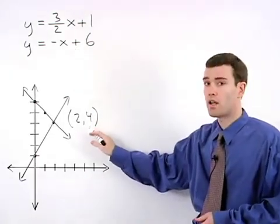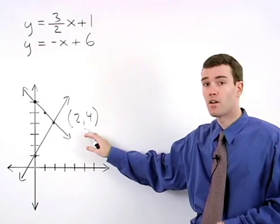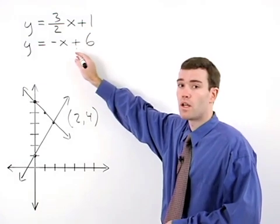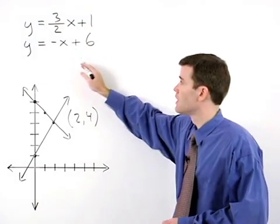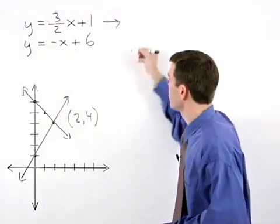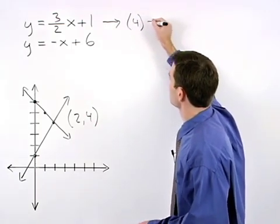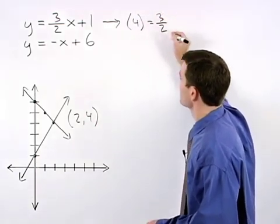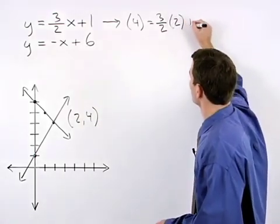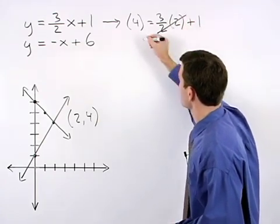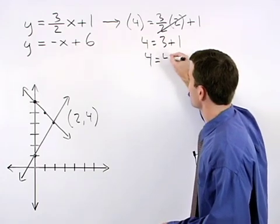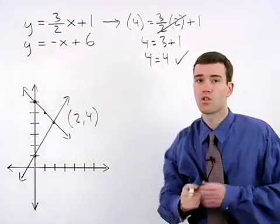It's very easy to check your answer by plugging these values for x and y back into each of the two original equations to see if they work. For our first equation, y is 4 equals 3 halves times x, which is 2, plus 1. The 2's cancel. We have 4 equals 3 plus 1, so 4 equals 4, and our first equation checks.